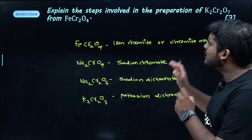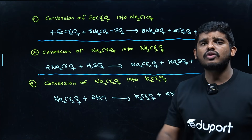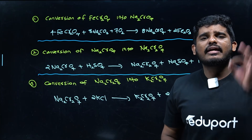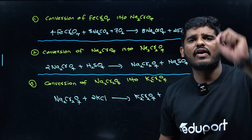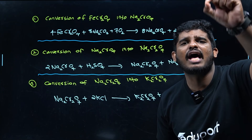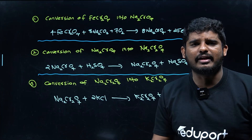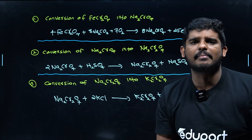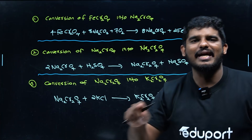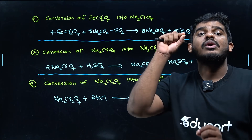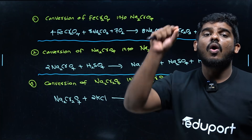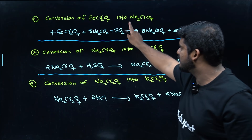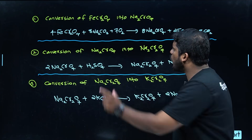So let's start with the first step. The first step is the conversion of FeCr2O4. Sodium Chromate is called Na2CrO4. That is the first step.